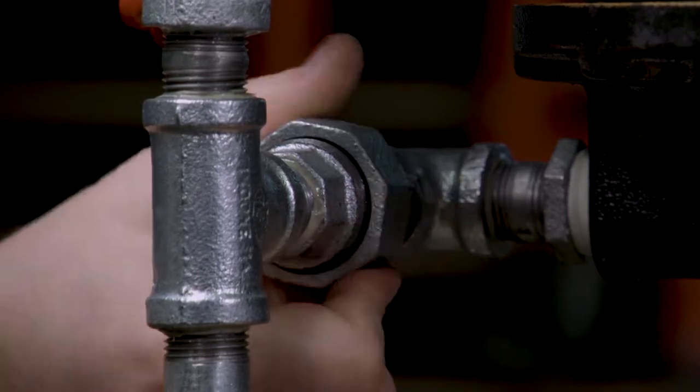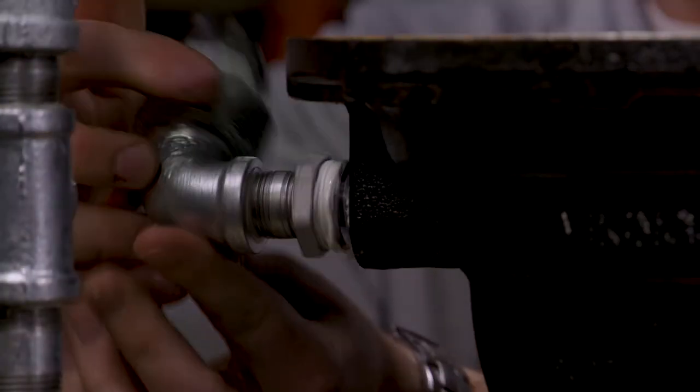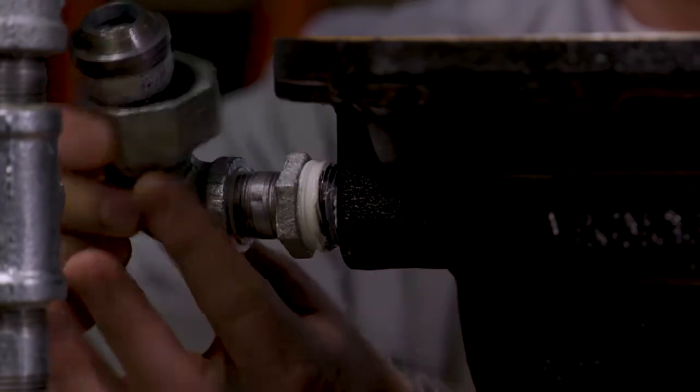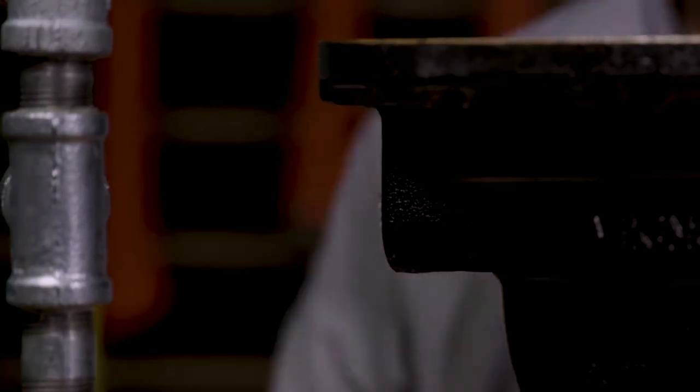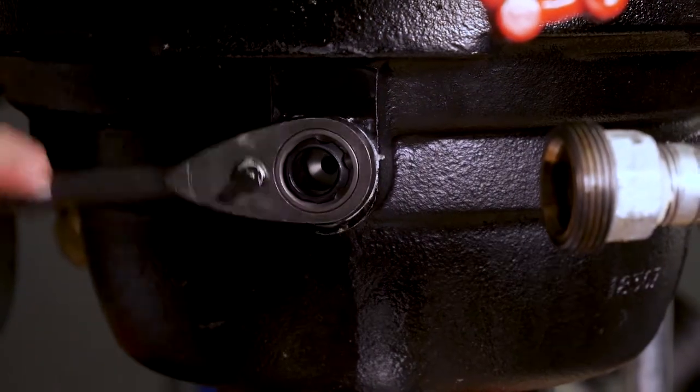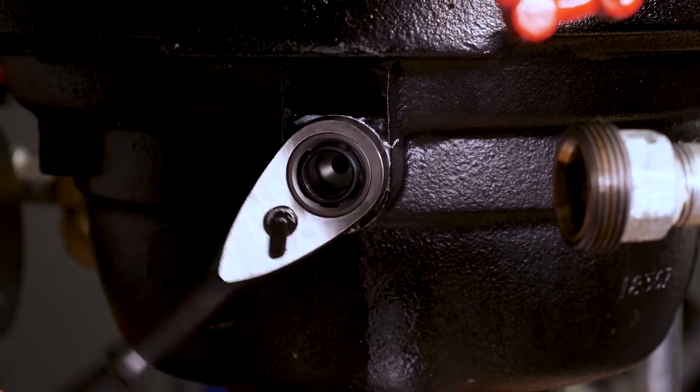With the coupling now open, we will next remove the associated trim that's remaining on the prime coupling. We can now disconnect the prime coupling from the priming chamber.